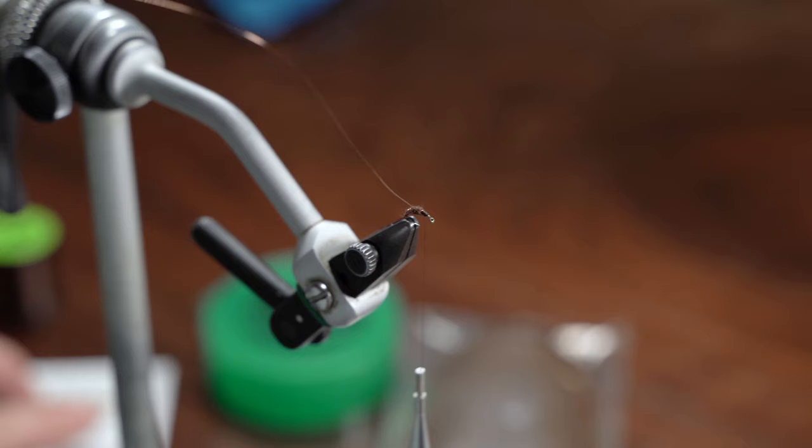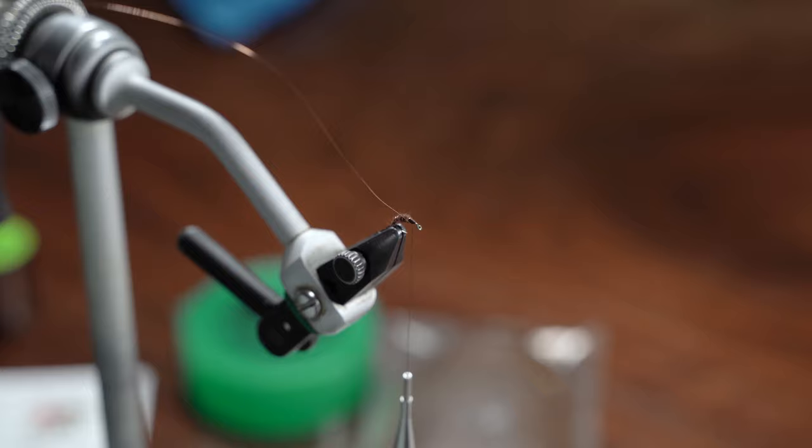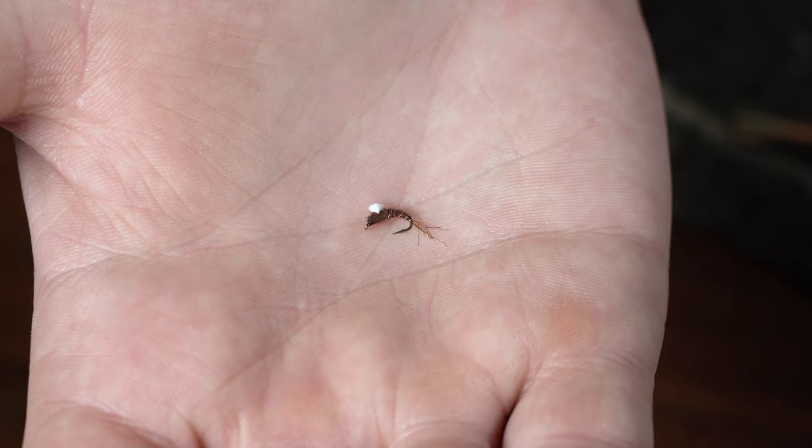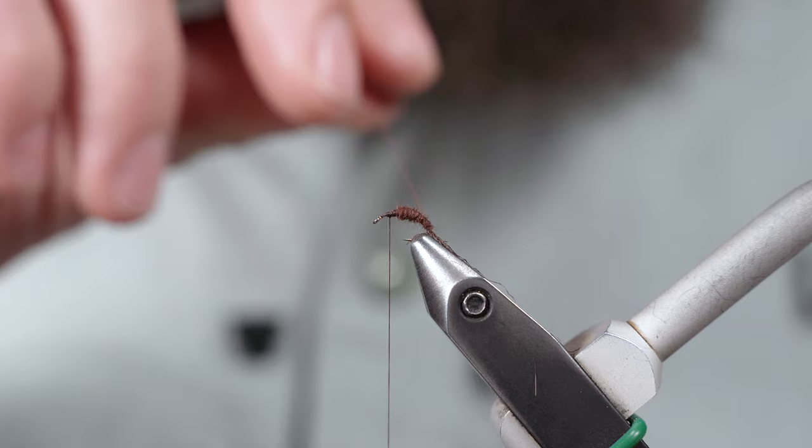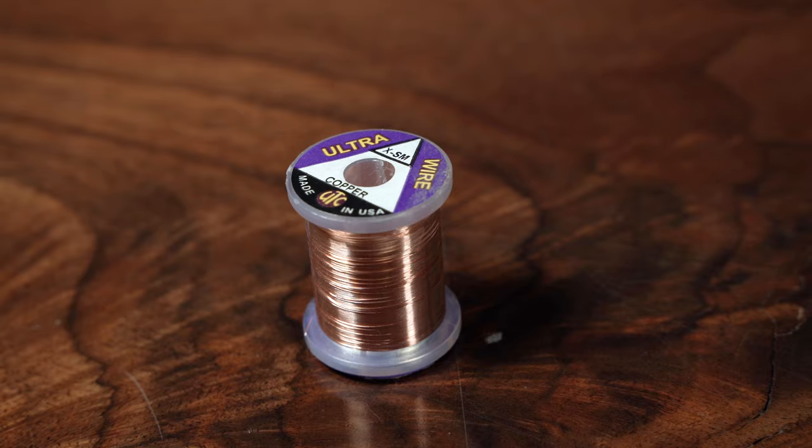I've got some of the fly here that I've tied. I also did a full video on this, the chocolate foam back emerger. Basically what I'm going to show you is I've already got my wire tied in here for my ribbing for this particular fly.